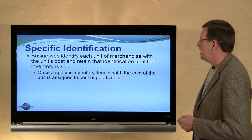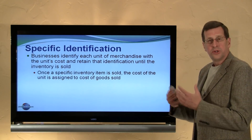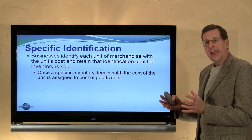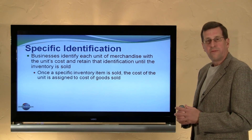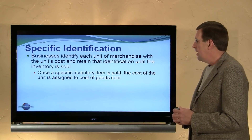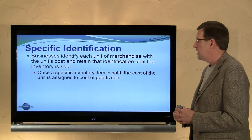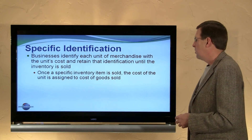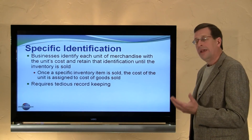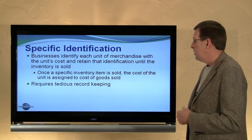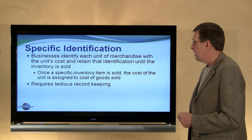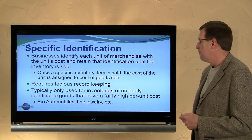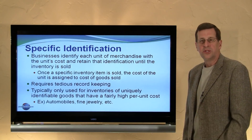Finally, there's a fourth method — specific identification — which may be used for automobiles, furs, jewelry, or similar items where every unit is unique and each has a separate cost. It's worth the trouble to track cost by serial number for a particularly expensive item of inventory. When that unit is sold, you find the cost for the specific unit sold and make the matching accordingly. It requires tedious record keeping, though with good computer systems that's less of a concern, and it's probably well worth it for high-dollar inventory. It's typically only used for uniquely identifiable goods with a fairly high per-unit cost.